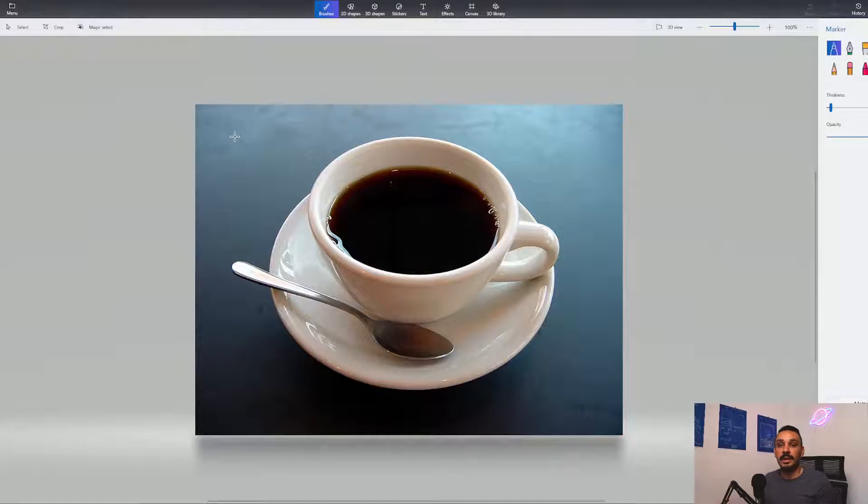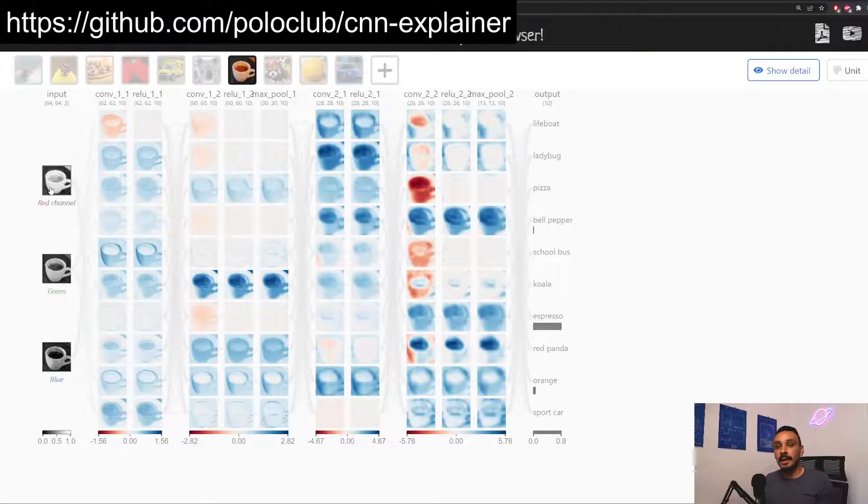And this is something that we can achieve by using a kernel, which is basically a matrix that holds a bunch of weights, which will be multiplied by the values of the pixel and will allow us to capture the 2D nature of this photo. So let's look now at an example using this awesome tool called the CNN Explainer. This is a very good tool to show you what happens inside a convolutional neural network.